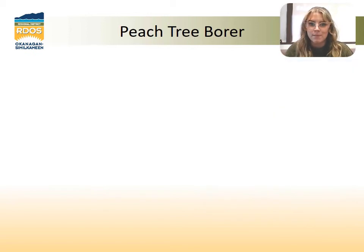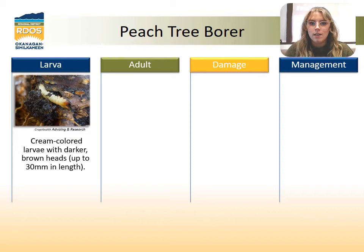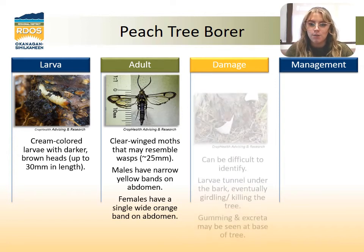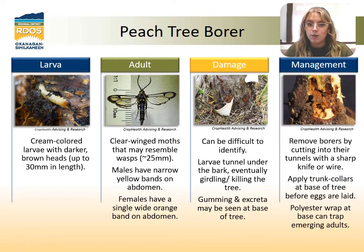Although it has a similar name, the peach tree borer is very different. The larvae are larger and are cream colored, and the adult is a clear-winged moth and very distinguishable. This pest is harder to detect, as it bores into the actual tree. If you see a buildup of soil, sawdust, and frass — which is the excrement of the pest — at the base of the tree, you may have this pest. It loves to get into your tree through wounds or weakened spots, and can actually kill your tree. To manage this, you can probe the tree at areas of entry at the base of the tree carefully with wire or a sharp knife. You may also apply trunk collars before the eggs are laid, or polyester batting to trap emerging adult moths.